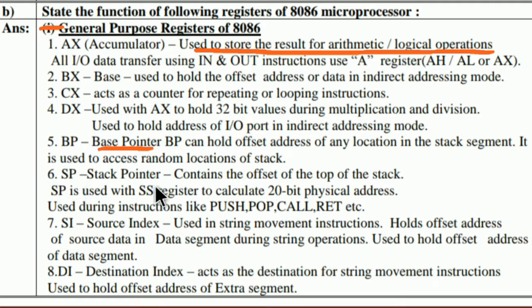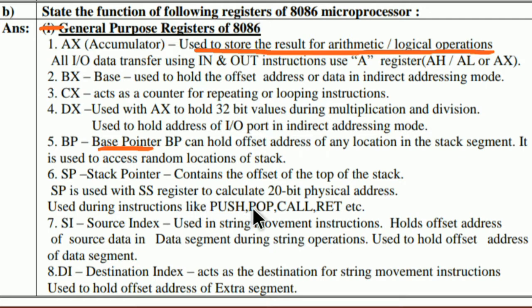The sixth is SP, the stack pointer, which contains the offset of the top of the stack. SP is used with the SS register to calculate the 20-bit physical address. It is used during instructions like PUSH, POP, CALL, RET, etc.